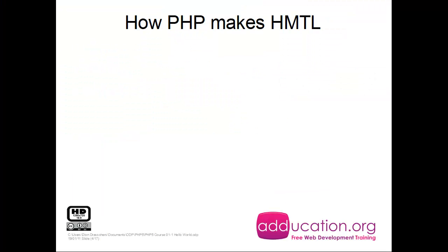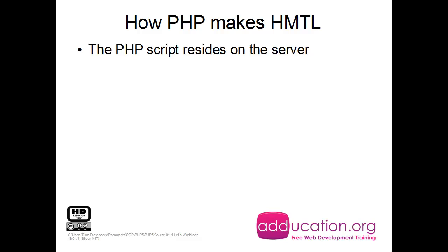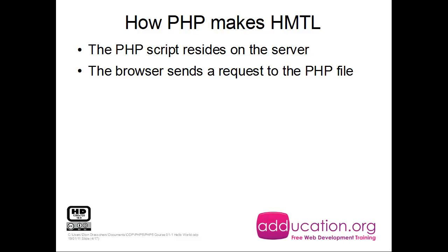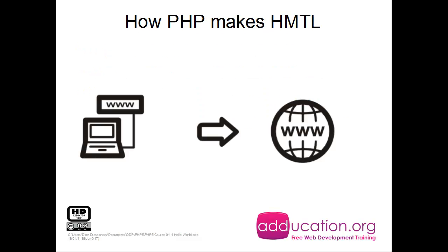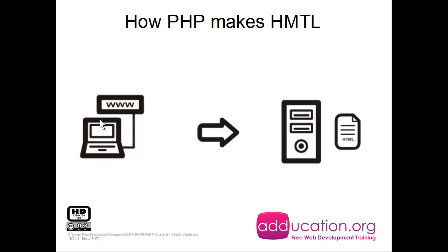Now let's check how PHP makes HTML. In a previous lesson we saw that PHP scripts reside on a server. The browser sends a request to a PHP file on the PHP server, and then the PHP file sends back HTML to the browser. This is just normal — I'm on a browser, I go to the internet, and I get an HTML file back. Nothing new.